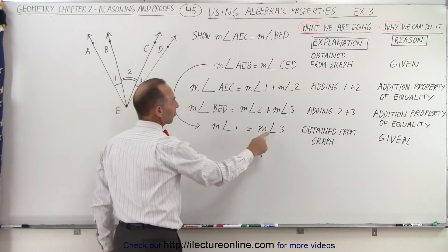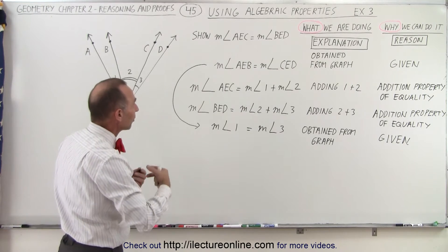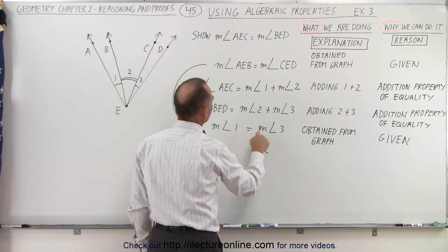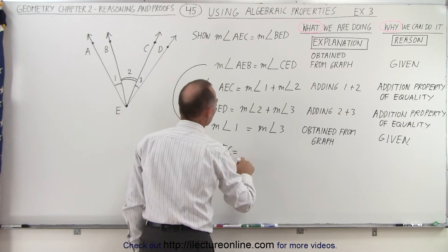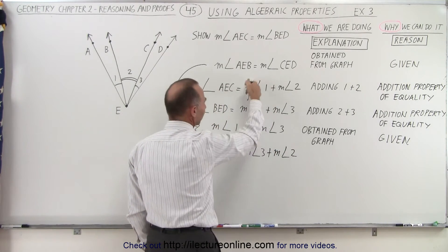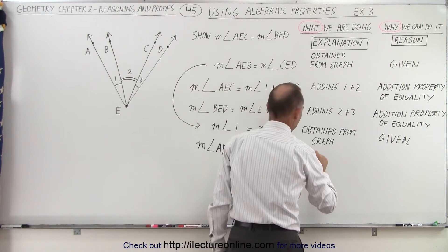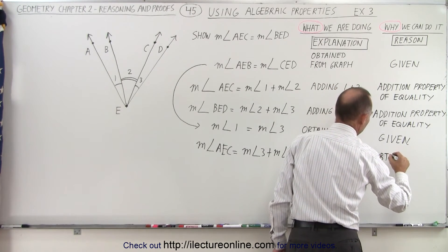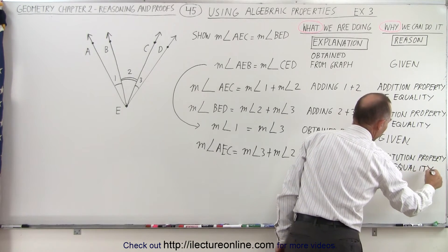Since the measure of angle 1 equals the measure of angle 3, I can use the substitution property of algebra. If one is equal to the other, I can make a substitution — I can substitute the measure of angle 1 with the measure of angle 3. So the measure of angle AEC equals the measure of angle 3 plus the measure of angle 2. I'm allowed to do this because of the substitution property of equality.